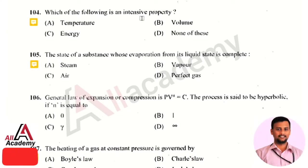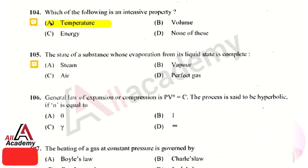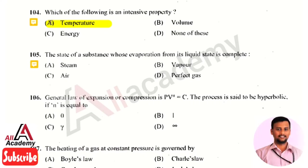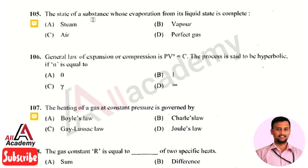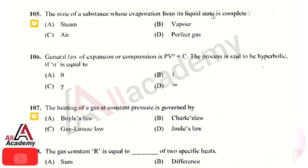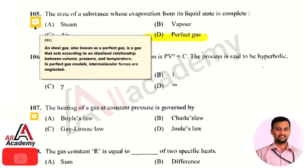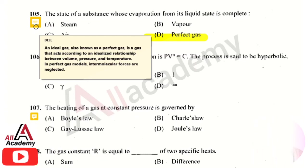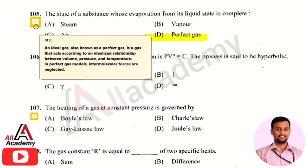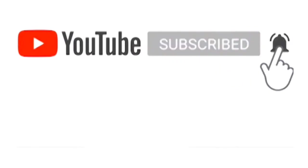The next question: which of the following is an intensive property — intensive properties are independent of mass. The right answer is option 1, that is temperature. Temperature is independent of mass and does not depend on the amount of mass, so it is an intensive property. The next question: the state of a substance whose evaporation from its liquid state is complete — the right answer is option 4, that is perfect gas. A perfect gas, also called ideal gas, acts according to the idealized relationship between volume, pressure and temperature. In the perfect gas model, intermolecular forces are neglected.